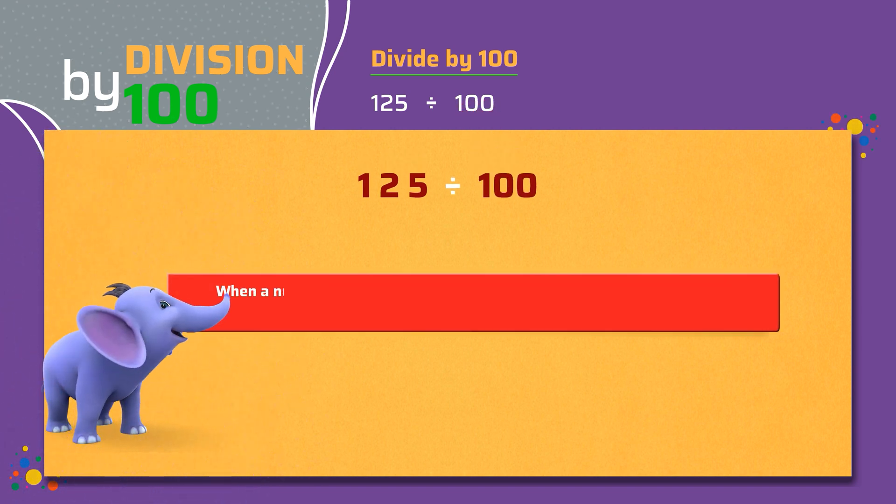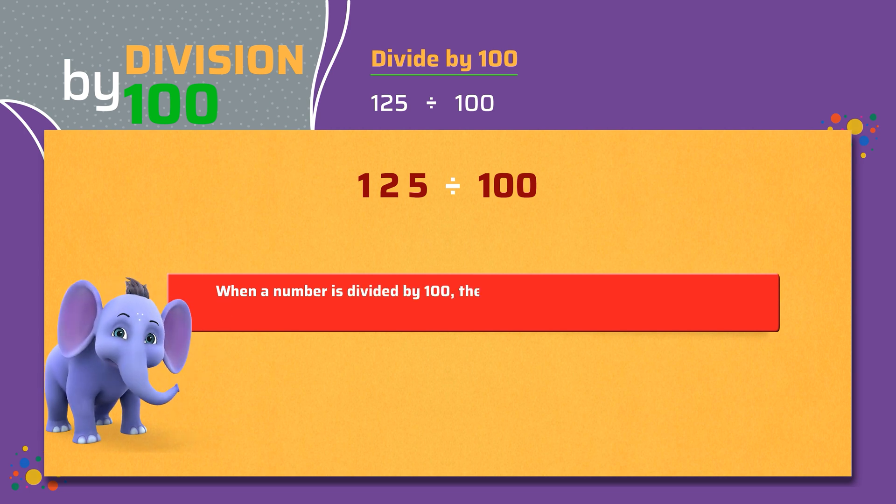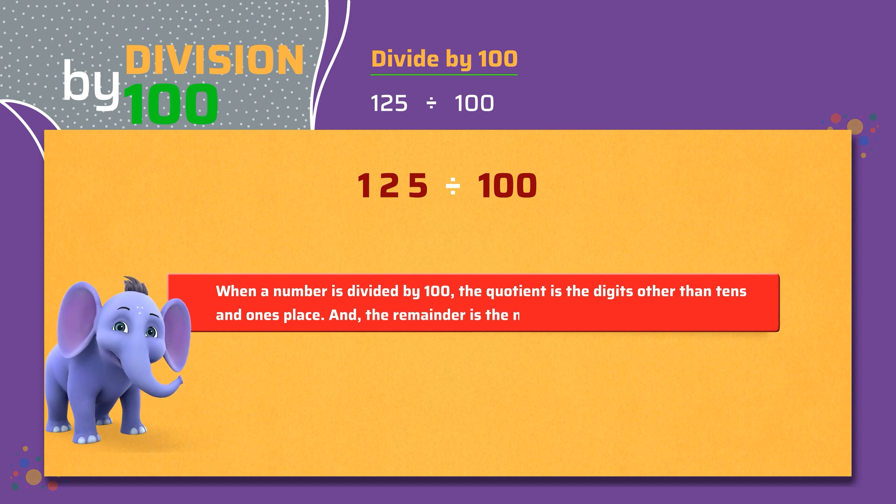We know, when a number is divided by 100, the quotient is the digits other than the tens and ones place. And the remainder is the numbers in the tens and ones place.